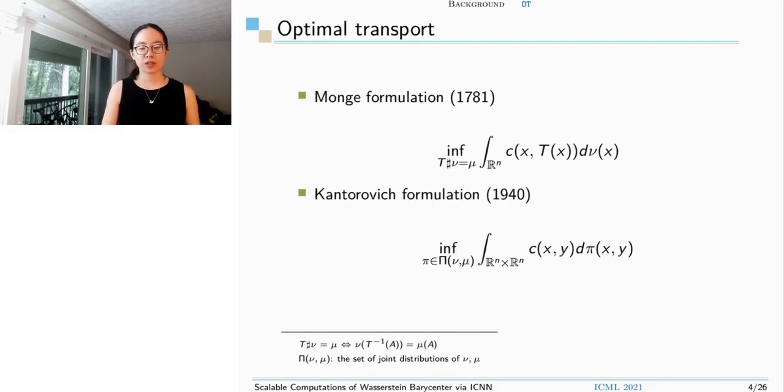The French engineer Monge aimed to find an optimal strategy to move soil to road construction sites. So the Monge formulation is to minimize the integral of cost when you transport mass from distribution nu to mu by optimal map T. T is the so-called Monge map, and c is the cost here.